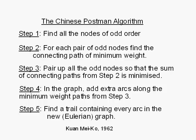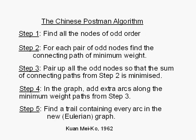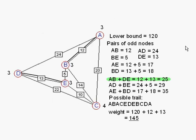We've just performed what we call the Chinese Postman algorithm. Let's run through quickly what that says. First, we find all the nodes of odd order. We found there were four of them. For each pair of odd nodes, find the connecting path of minimum weight. We did that here, six of them, and those are the minimum connecting distances or weights between those pairs.